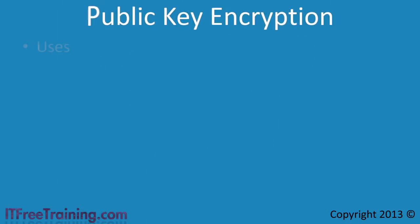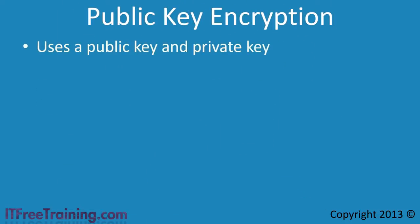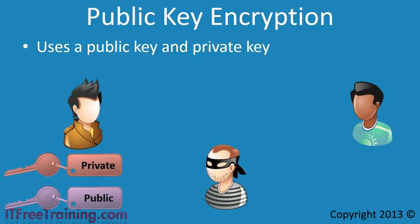Public Key encryption uses two keys: a public and private key. To illustrate, imagine that two people want to communicate with each other. In between them is a third party that is trying to eavesdrop on their conversation. With traditional encryption that uses the same key, the problem is getting the key to the second party without the third party obtaining the key.